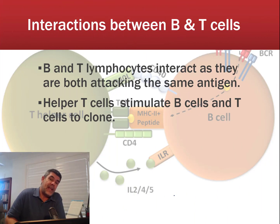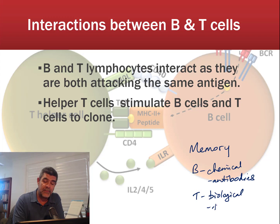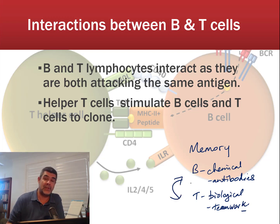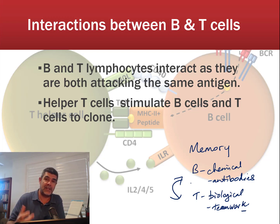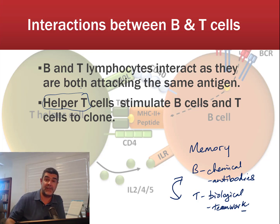Both B cells and T cells are part of the immune response, and both are associated with memory cells. B cells are chemical in nature — their response is to secrete antibodies — while T cells are more biological, with different cells having specific roles working together as a team. There is an interaction between B lymphocytes and T lymphocytes to make the system efficient. Helper T cells release chemicals that can specifically stimulate B and T cells to clone, increasing the size and speed of the response against a particular pathogen.